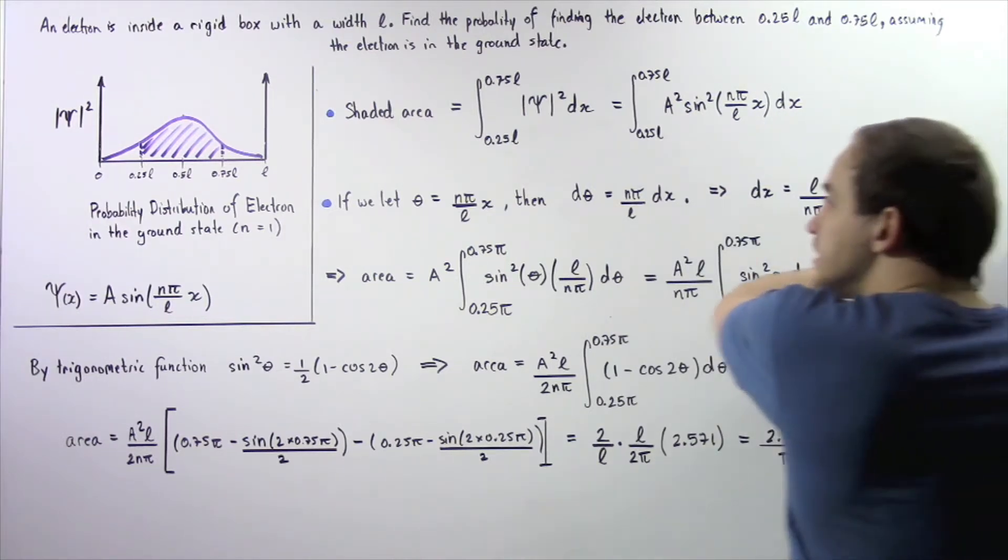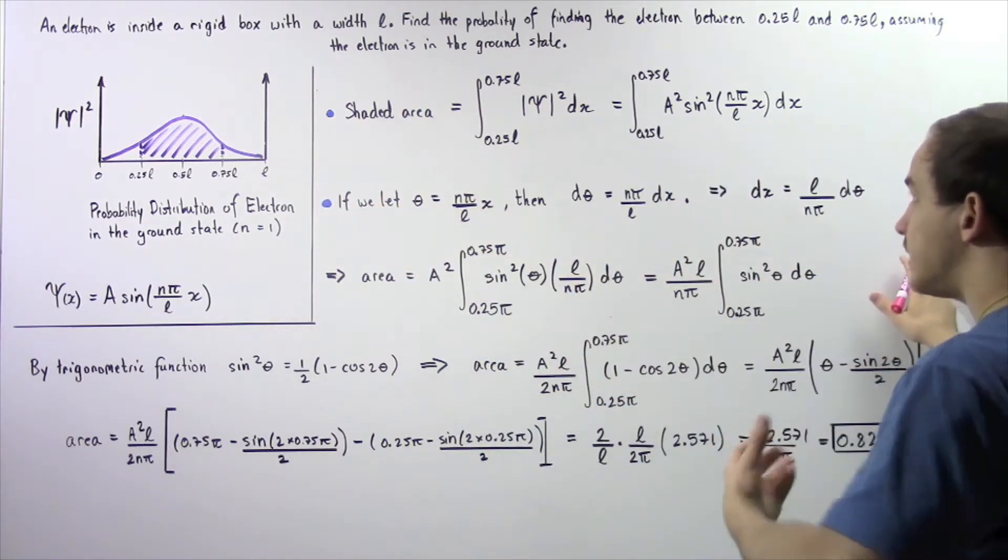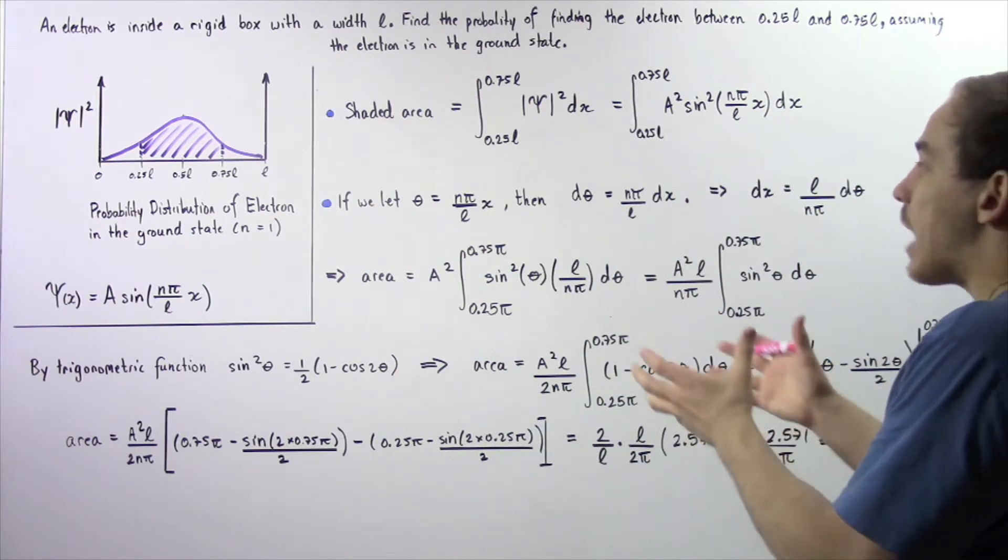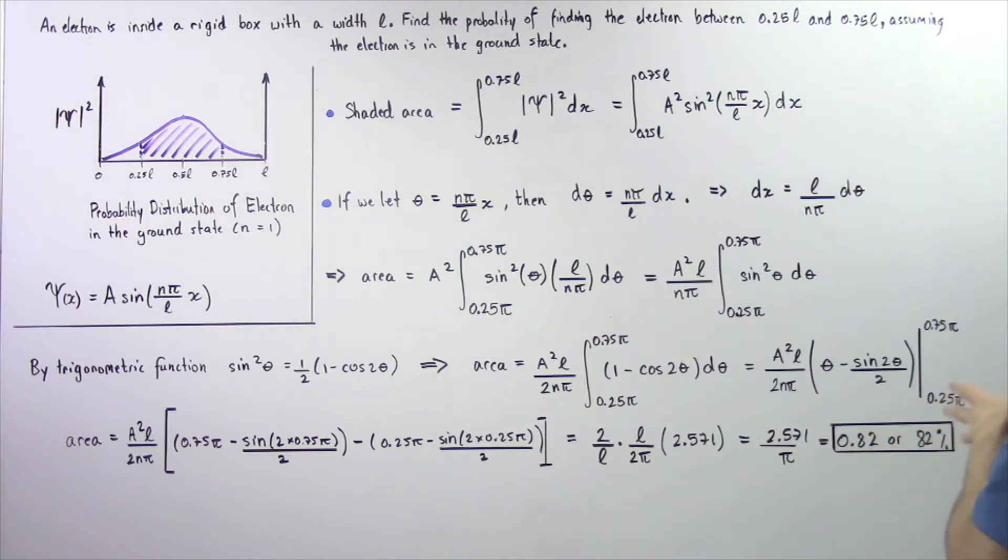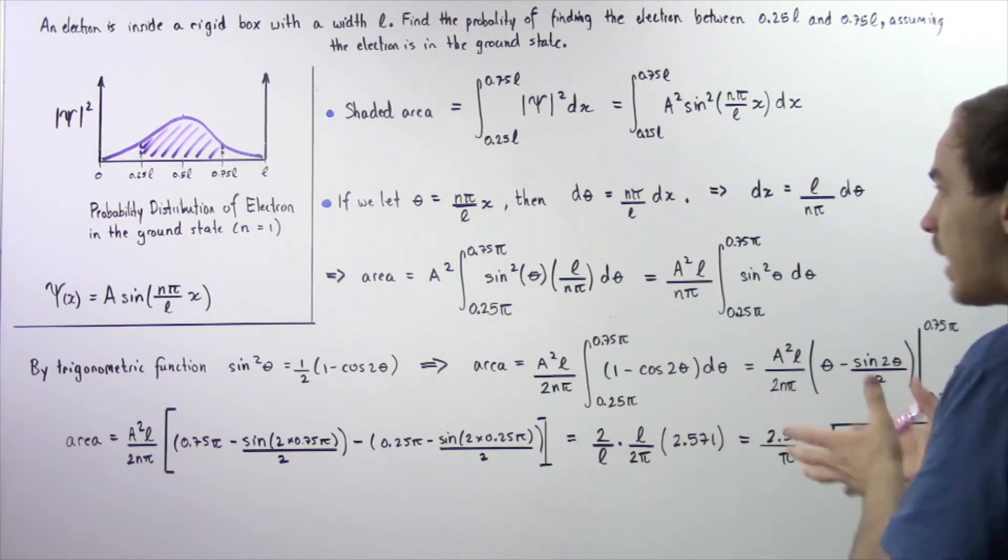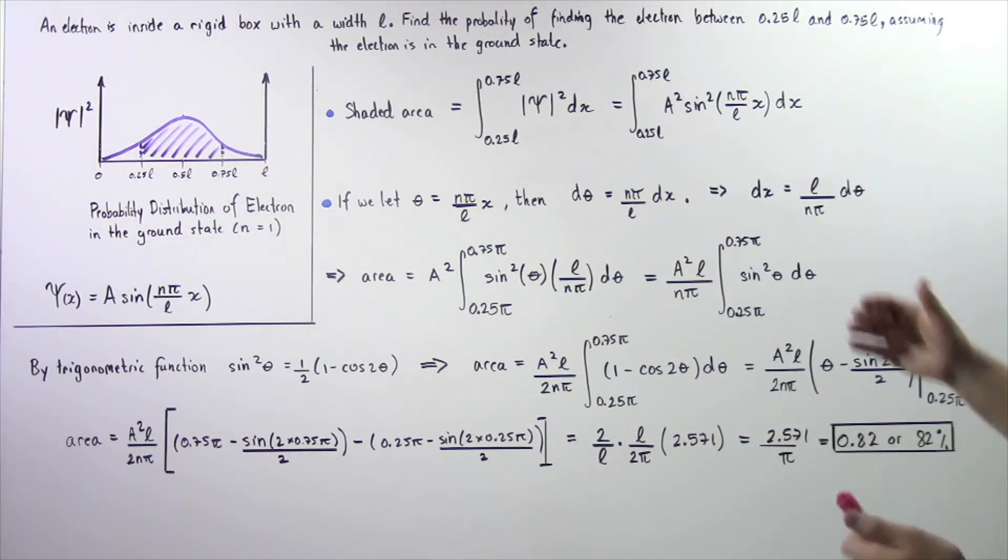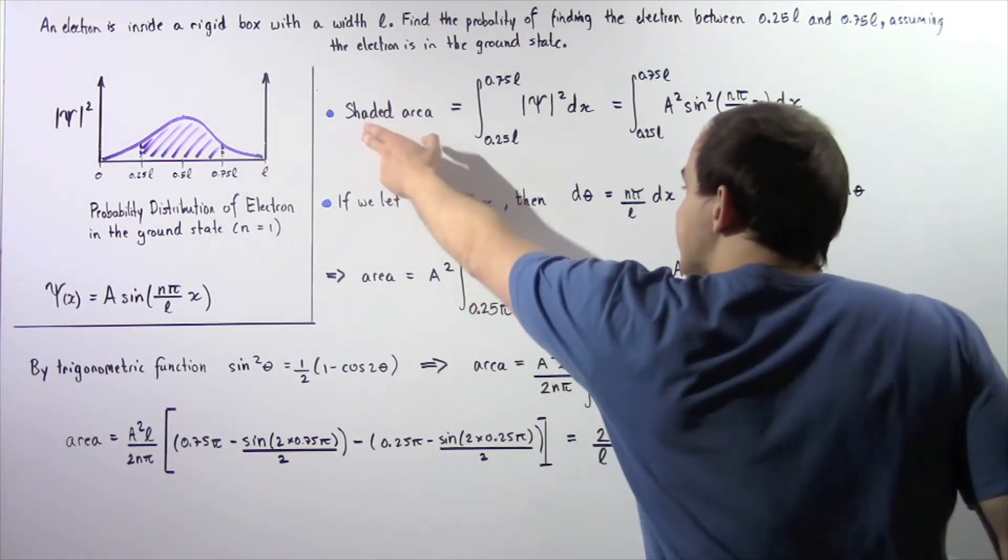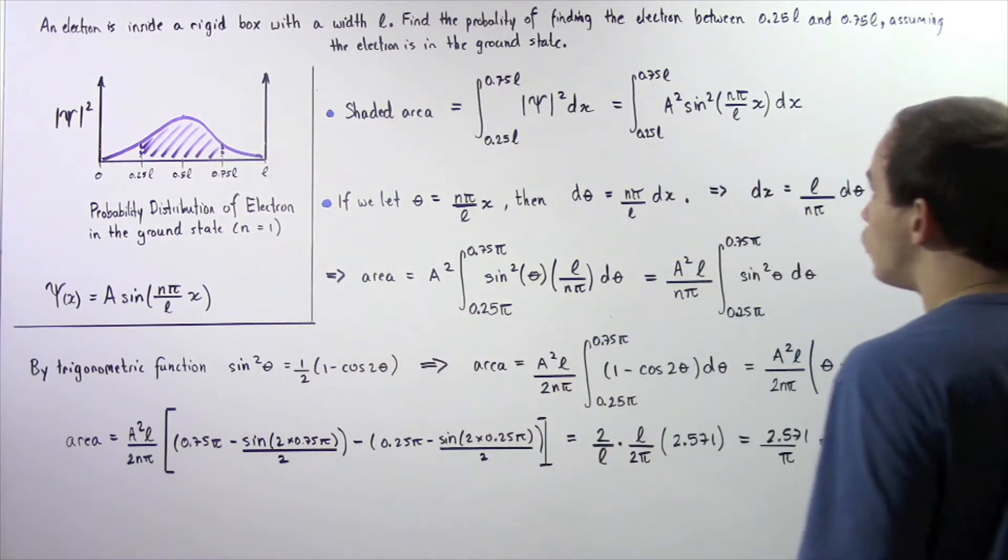The entire point of this step was to find what our θ is in terms of x, then rearrange and solve for x in terms of θ, as well as dx in terms of θ. We see that the shaded area is equal to...